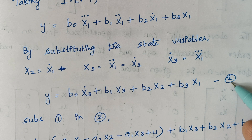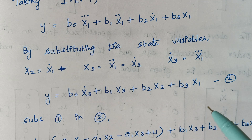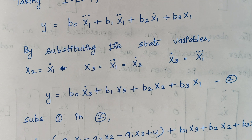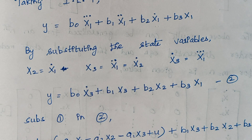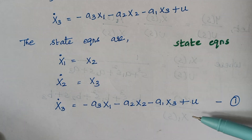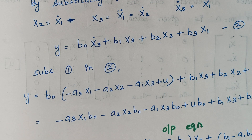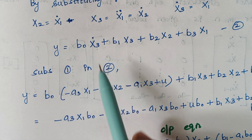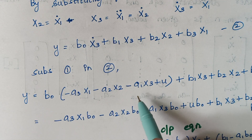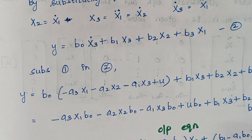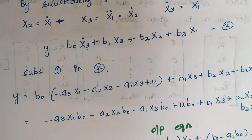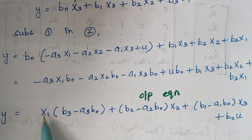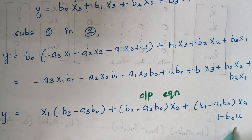We now substitute equation 1 into equation 2. Substituting the expression for x3̇ from equation 1 into equation 2, then multiplying out the terms and rearranging, we collect all x1, x2, x3, and u terms accordingly.